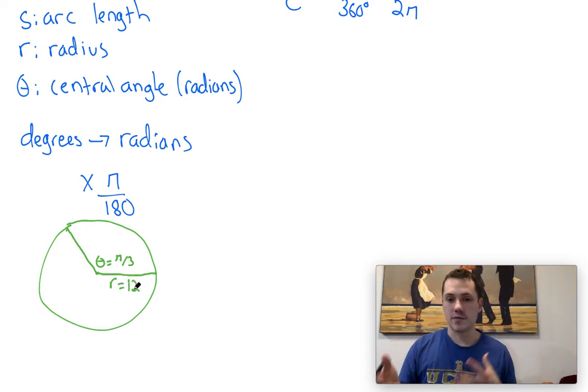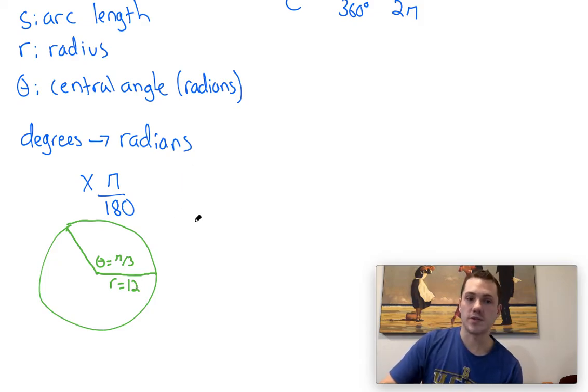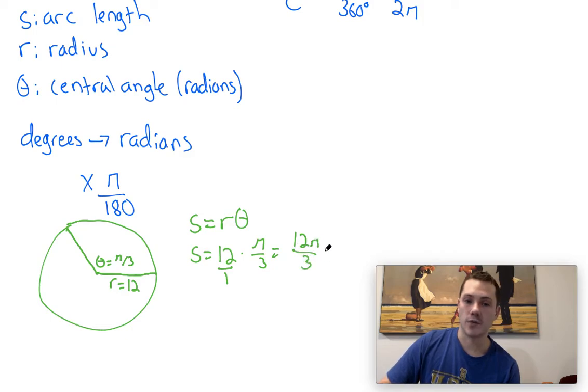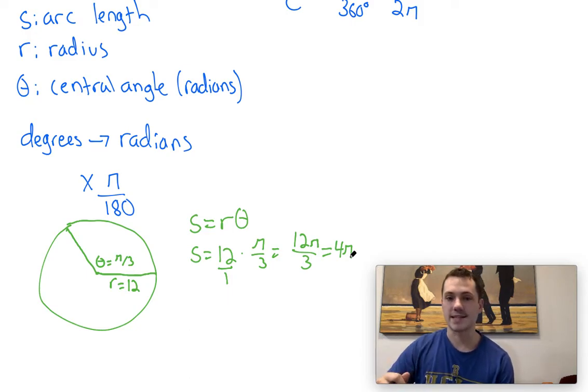So I'll solve this using each of the formulas. So first, we're going to do S is equal to r theta. And what we're going to find is the arc length is equal to 12 times pi over 3. Multiplying fractions, remember 12 is the same as 12 over 1. You multiply straight across the top, straight across the bottom. So this would equal 12 pi over 3, which is just equal to 4 pi. That's it. That's how you would set up a problem like that.